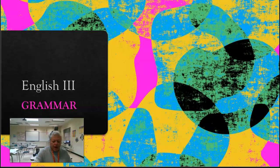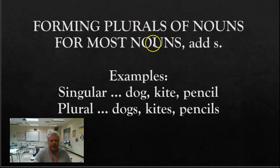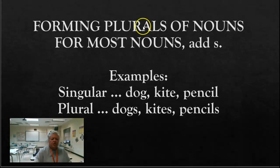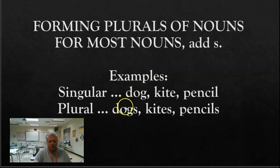English 3 Grammar: Forming plurals of nouns. For most nouns, you add an S. A noun can be one or more than one — I can have a sweater or sweaters. When you're forming plurals for nouns, most of the time you add an S. Look at your examples. Singular: dog, kite, pencil. Add an S — it makes a plural, more than one. Dogs, kites, pencils.